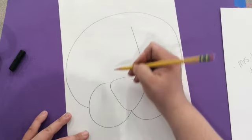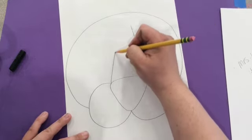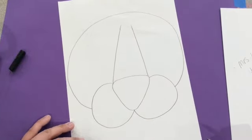Next draw two diagonal lines going up towards the forehead. This will create the bridge of our tiger's nose.